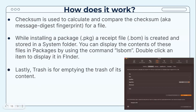Checksum is used to calculate and compare the checksum — also known as the message digest or fingerprint — for a file. While installing a package, a receipt file is created and stored in a system folder; you can display the contents of these files in the Packages subgroup using the command 'lsbom' and double-click an item to display it in Finder. Lastly, Trash is for emptying the Trash of its contents, which is helpful since sometimes deleted items aren't fully gone.